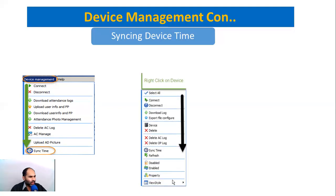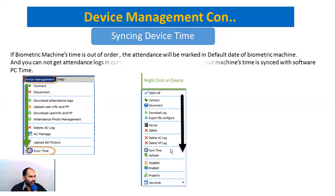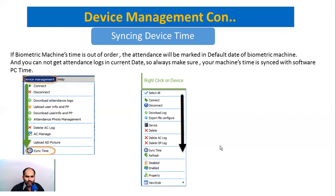You can also right-click on your device and go to Sync Time to easily sync it. If the biometric machine time is out of order, attendance will be marked on the wrong date and you cannot get the attendance log for the current date. Make sure your machine time is synced with your software PC time.